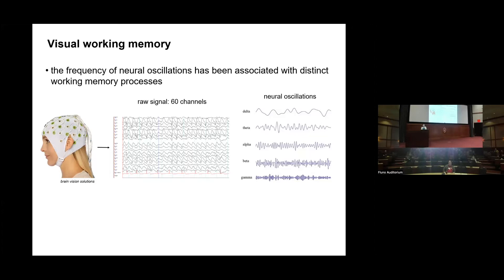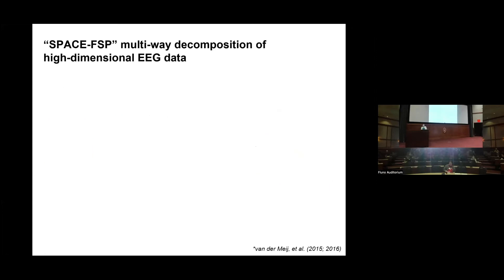We're recording the EEG—you get a raw signal. We have 60 channels or 60 electrodes. When we process the data into different frequencies, we get neural oscillations, which many are more familiar with as brain waves. The frequency of neural oscillations has been associated with distinct working memory processes. There are also cue-dependent effects and TMS-dependent effects when we deliver the magnetic pulse.